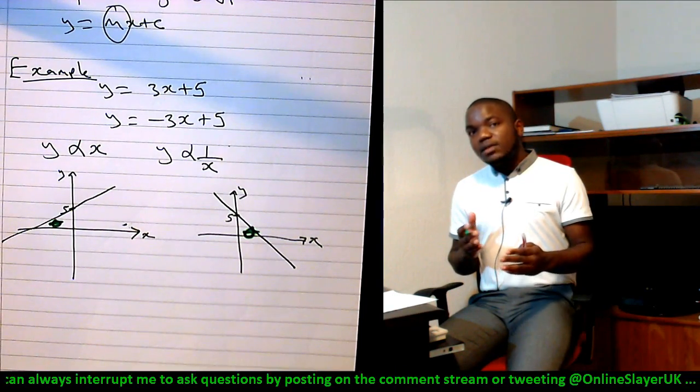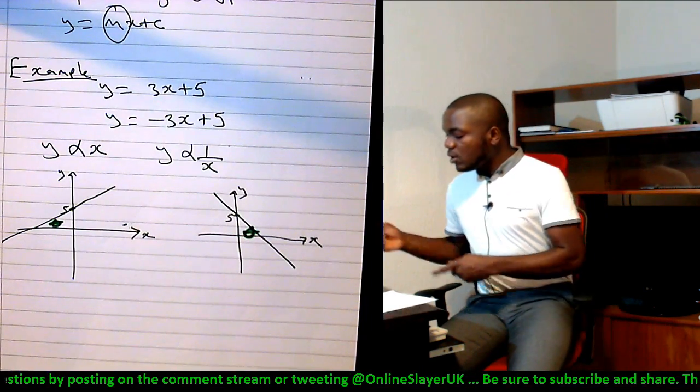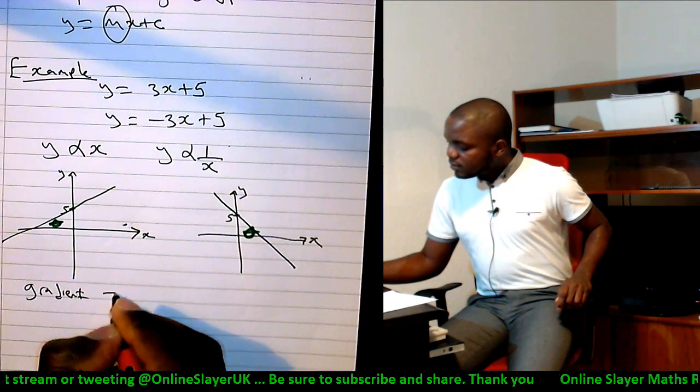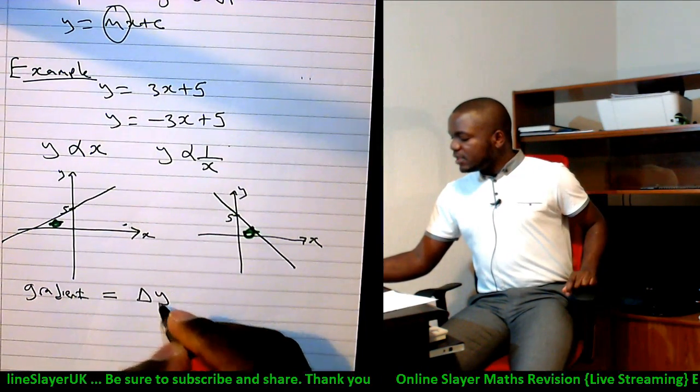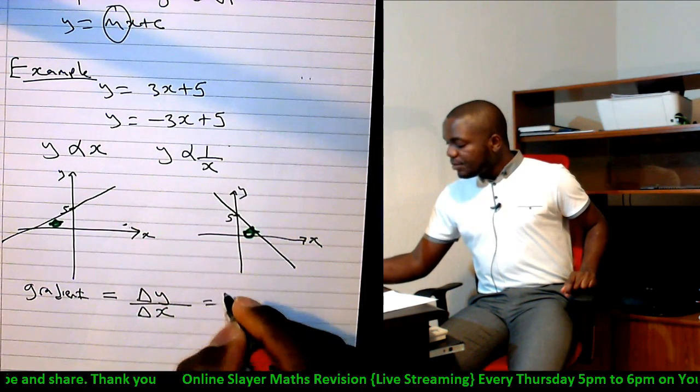Now the angle that the line makes with the horizontal can be observed or found out if you know what the gradient is, and that's because the gradient is actually calculated from a change in y value over a change in x value.